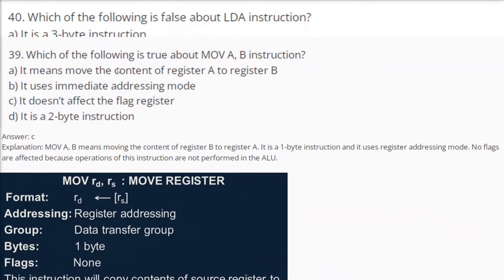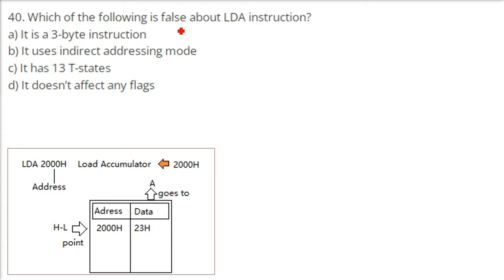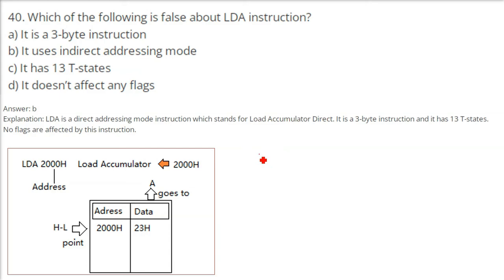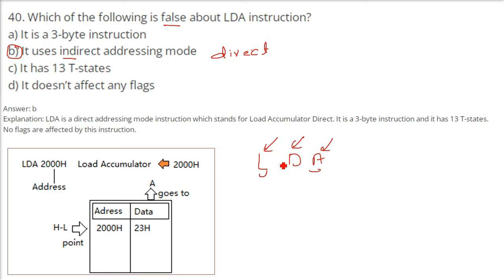Which of the following is false about the LDA instruction? LDA stands for Load Accumulator Direct. The false option is that it uses indirect addressing mode — LDA actually uses direct addressing mode because the address is directly given in the instruction, for example LDA 2000H. LDA is a 3-byte instruction, uses 13 T-states, and does not affect any flags — all of which are true. Only the indirect addressing mode claim is false.